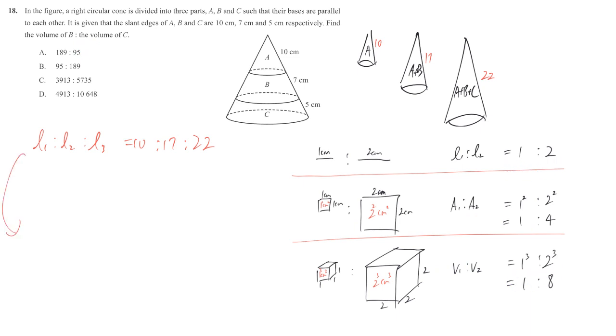So, we just cube them, we get V1 to V2 to V3. So, 10 cubed, 17 cubed, and 22 cubed. Therefore, we get 1000 to 4913 to 10648.